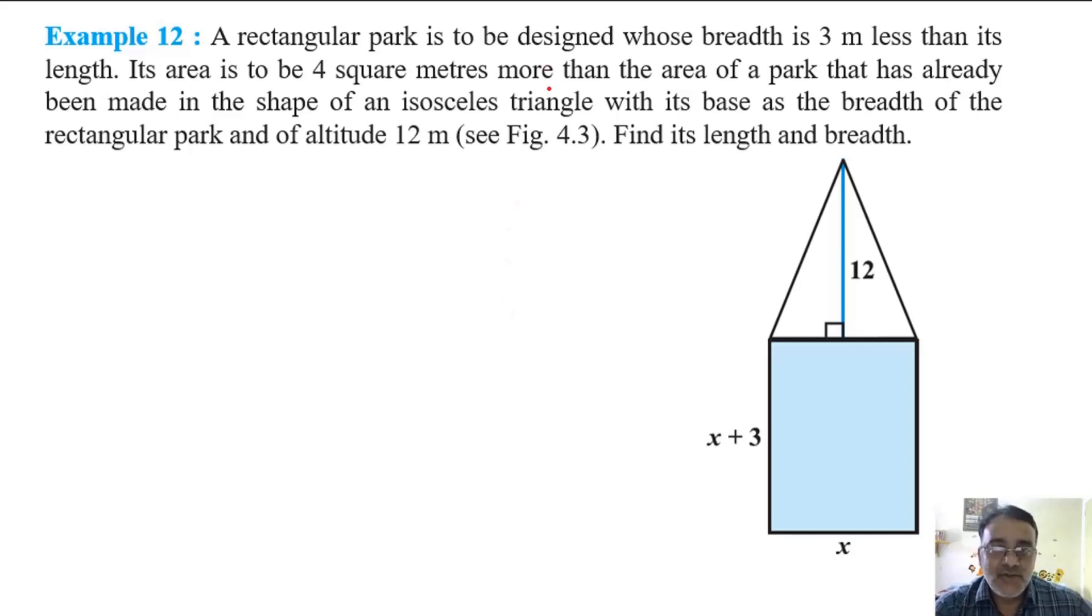A rectangular park is to be designed whose breadth is 3 meters less than its length. Its area is to be 4 square meters more than the area of a park that has already been made.